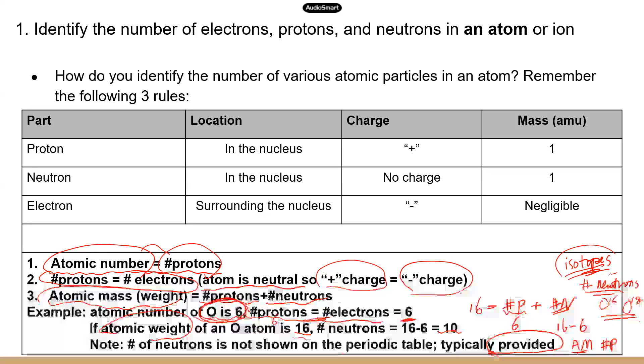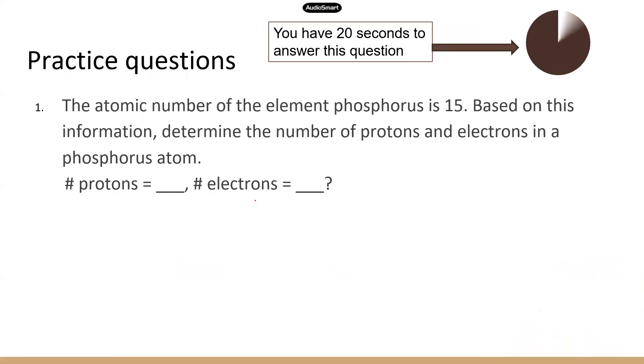Now let's do some practice questions. Number one. The atomic number of phosphorus is 15. And the atomic number is based on the number of protons. So they're the same. So this is 15. And this is the element, right? It's not ion yet. So it's that neutral atom. So the number of electrons should be the same as the number of protons. Also 15.